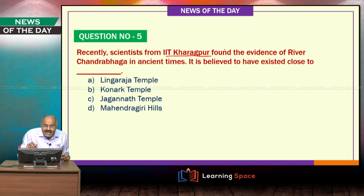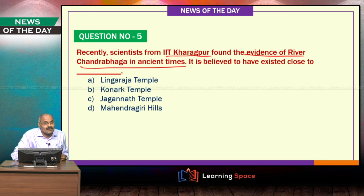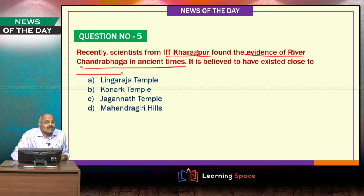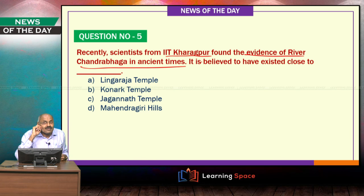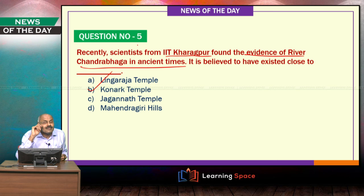Recently, scientists from IIT Kharagpur found evidence of the river Chandrabhaga. In 2016, two things to note: the existence of the Saraswati river was confirmed by one panel, and at the same time IIT Kharagpur scientists stated that there was existence of the Chandrabhaga river in ancient times, believed to have existed almost 1 to 2 kilometers away from the Konark temple.